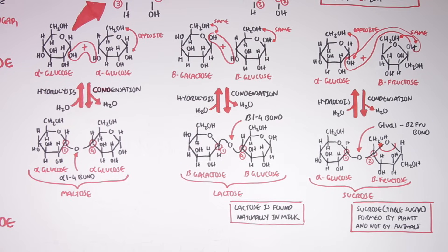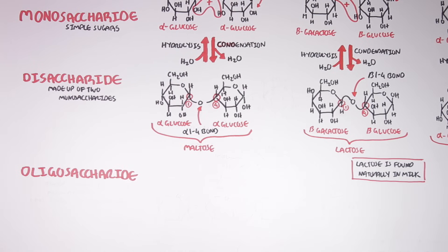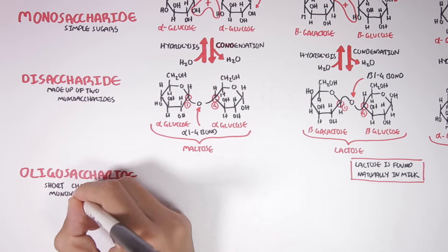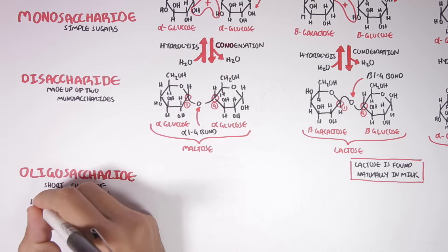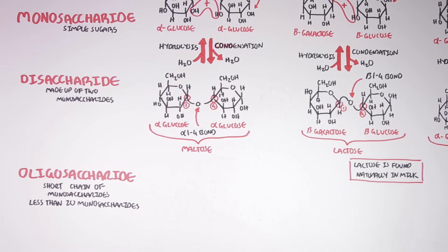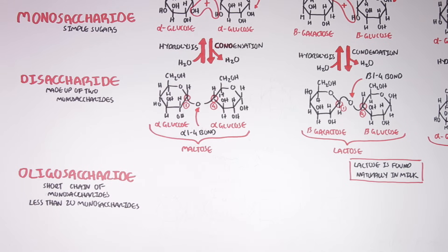So the disaccharides — maltose, lactose, and sucrose — are all good examples that we encounter in our normal diet. Now let's look at oligosaccharides. Oligosaccharides basically consist of short chains of monosaccharides, typically less than 20 monosaccharides linked together. A disaccharide can actually be referred to as an oligosaccharide.